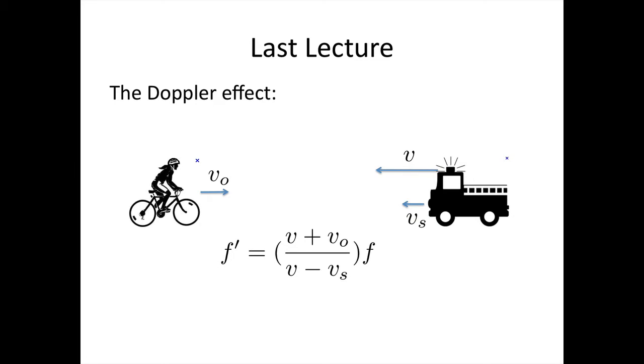We also saw the Doppler effect. We have the velocity of sound, the velocity of a source, and the velocity of an observer. The frequency observed by the observer is related to the frequency emitted by the source through v plus v naught over v minus vs. This is for the case when the source and the observer are moving towards each other. If one is moving away from the other, then we need to switch the sign in front of that term.